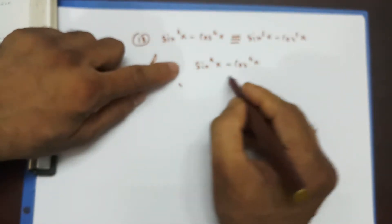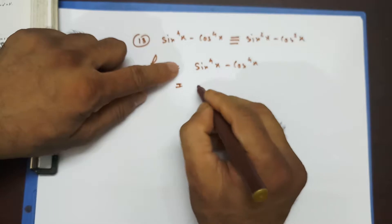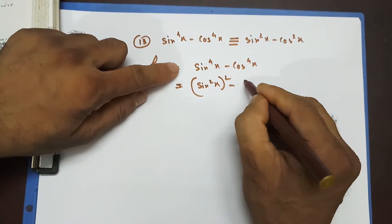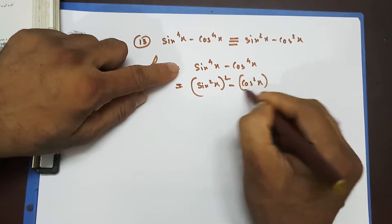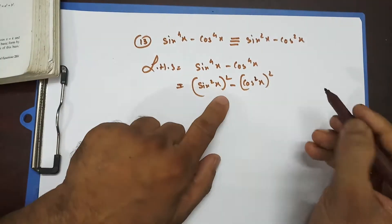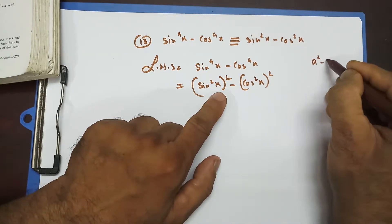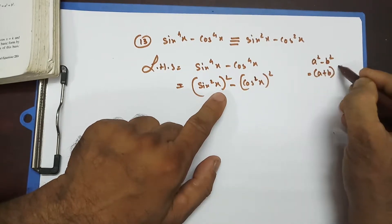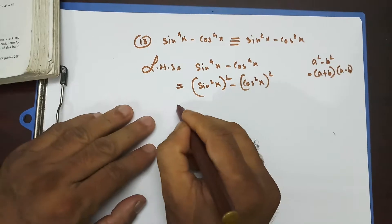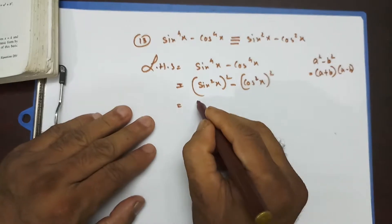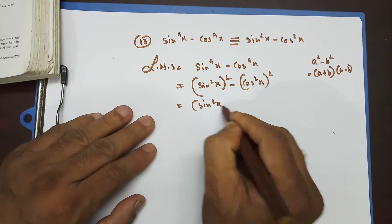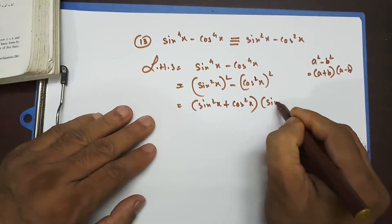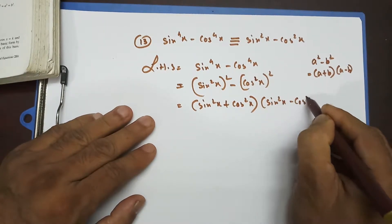This is relatively easy even though it looks scary at the beginning. I can write sin⁴x as (sin²x)² and cos⁴x as (cos²x)², and put this in the form of a² minus b², which I can replace by (a+b)(a-b). That gives us (sin²x + cos²x)(sin²x − cos²x).